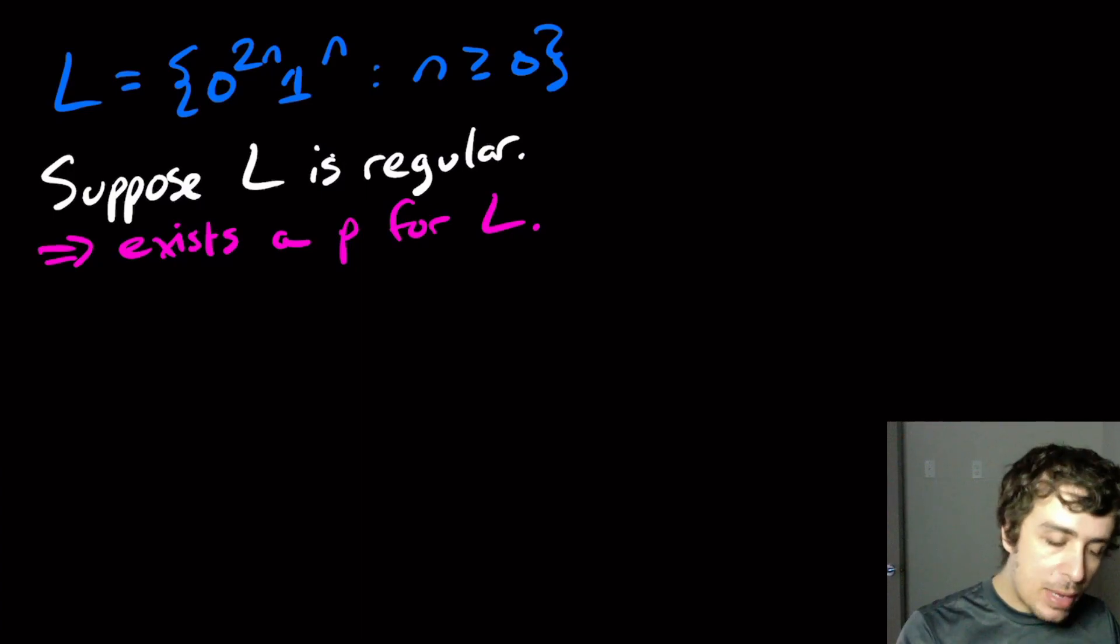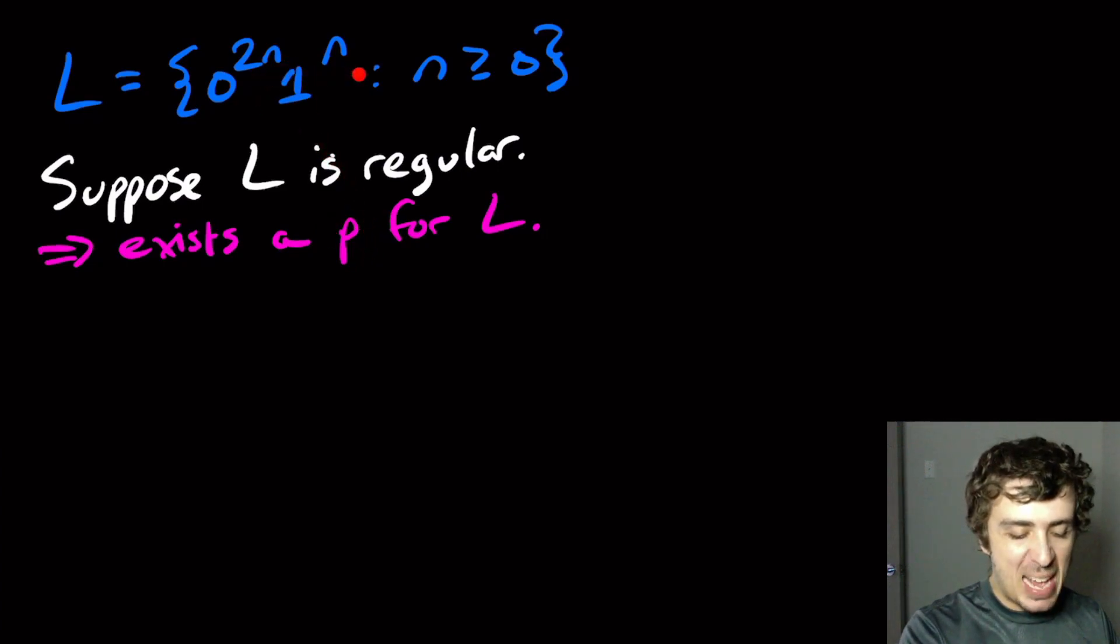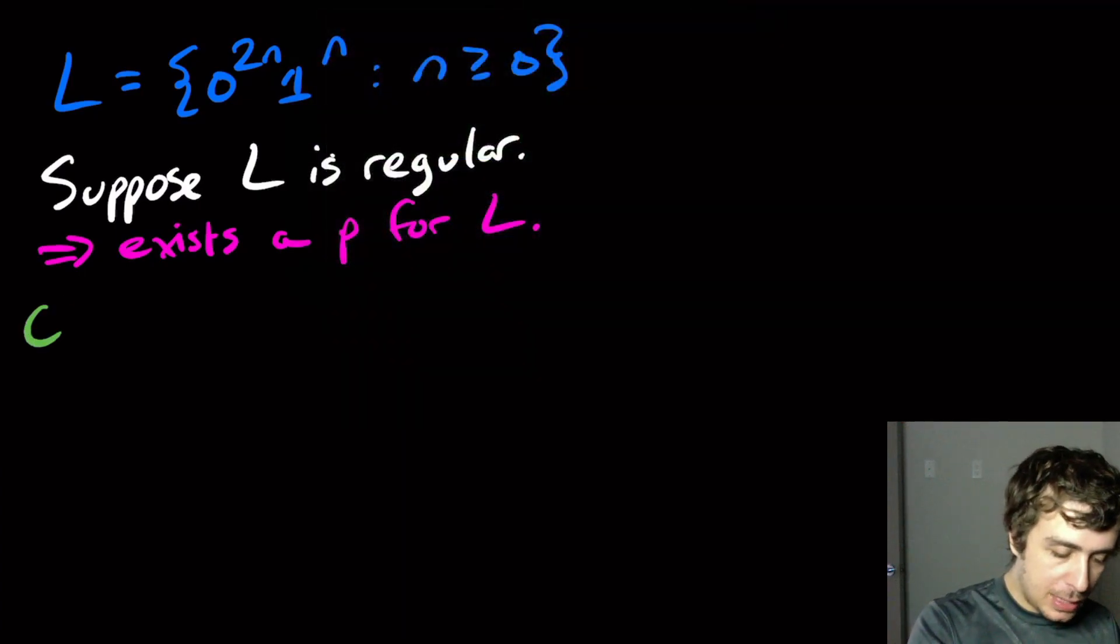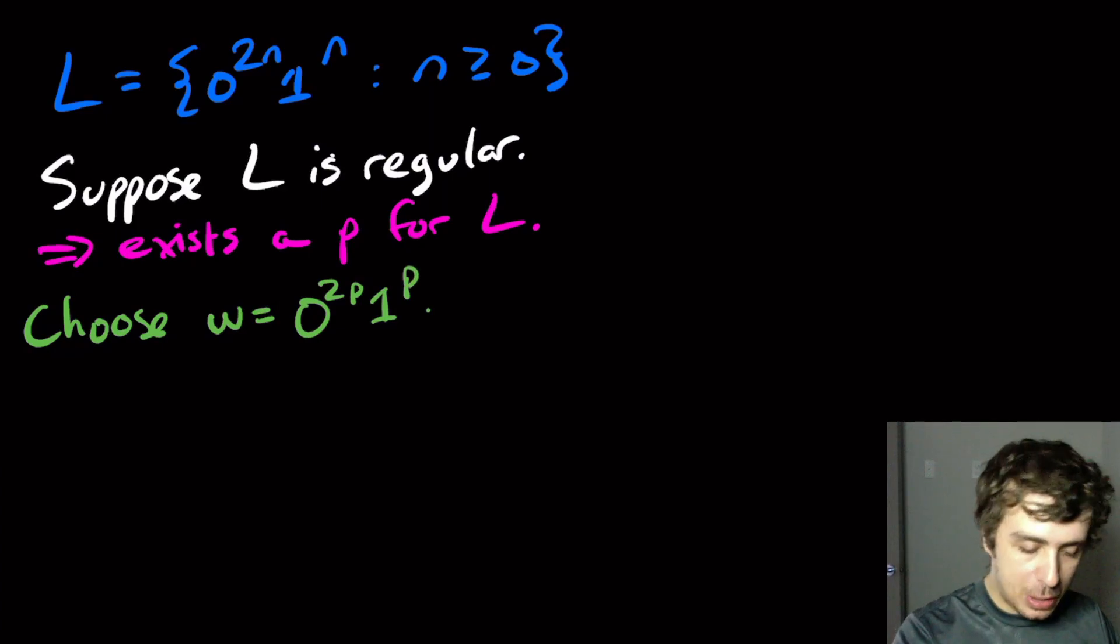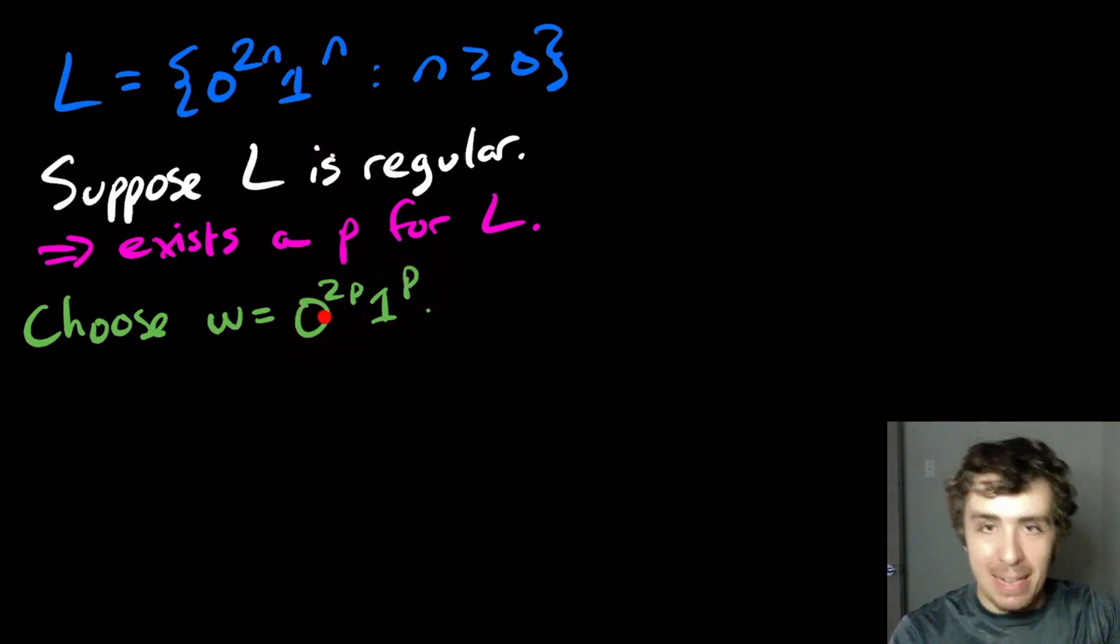Okay, well now we need to pick a string that's in the language and has length at least p. The common technique whenever you have n's and exponents and stuff is to put the p where the n is. It doesn't always work, but it's generally a good idea. So let's choose the string w equal to 0 to the 2p, 1 to the p. And this is clearly in the language because I just substituted the number in, and has length at least p, well, length at least 3p, which is fine.